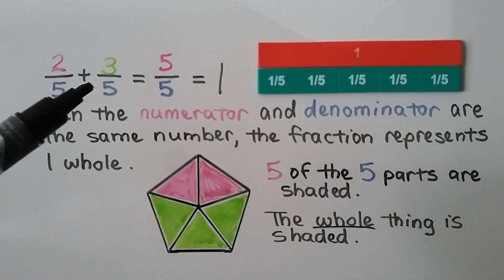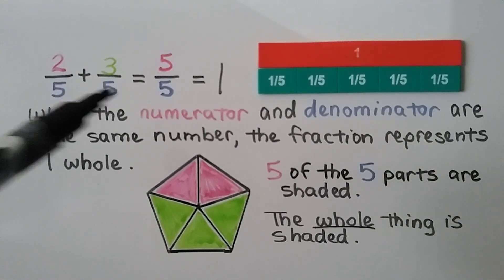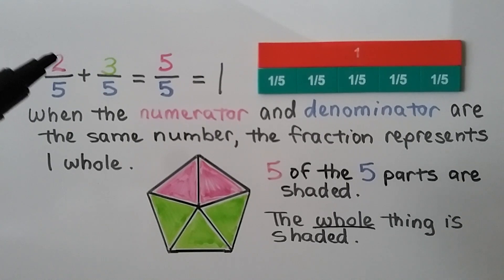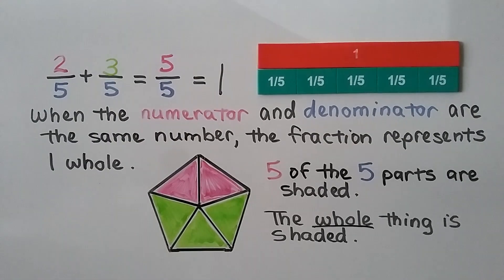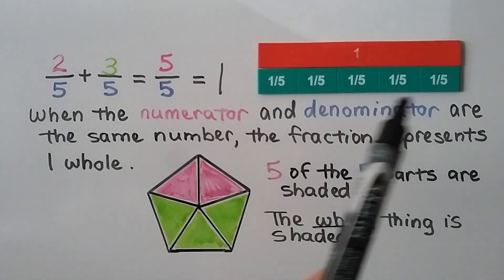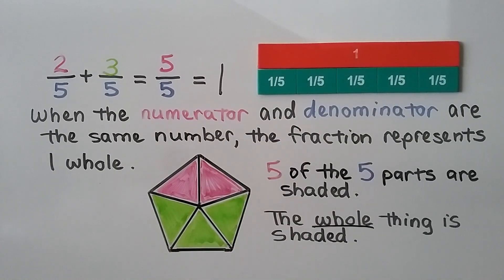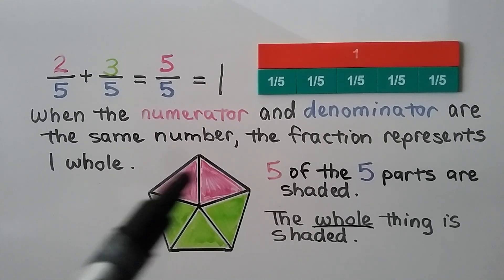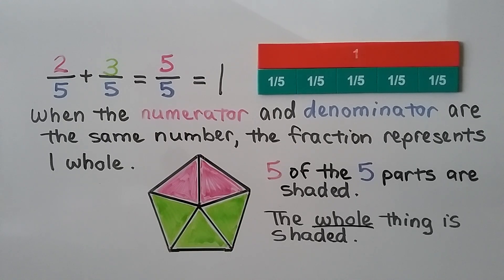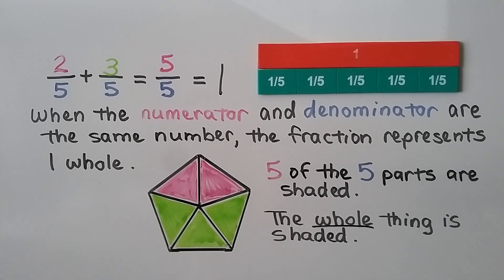Here we have two-fifths plus three-fifths. They have like denominators, so we just add the numerators: two plus three is five. We have five-fifths, which equals one whole. If a shape is split into five equal parts and we have all five of them, that's the same as one whole. When the numerator and denominator are the same number, the fraction represents one whole. Two-fifths plus three-fifths equals five-fifths, which equals one.